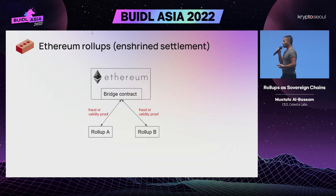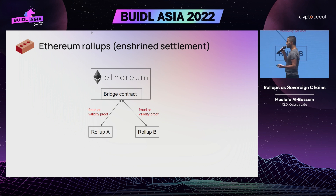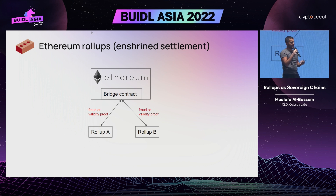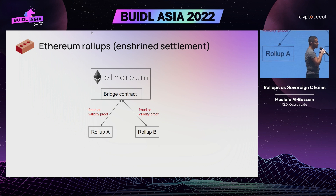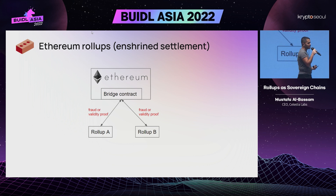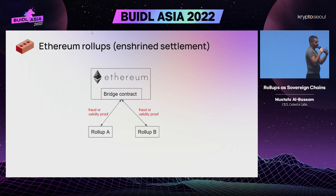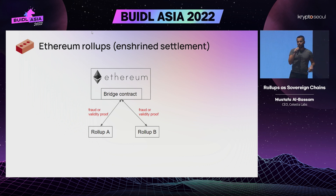In the current status quo — how current Ethereum rollups are designed — Ethereum is acting as that settlement layer. These rollups post their data to Ethereum and also to a smart contract on Ethereum, which interprets those headers and can also interpret fraud and ZK proofs. In this setup, the rollup is effectively a layer two or a baby chain to Ethereum, where the correct or canonical chain for that rollup is decided by a smart contract on Ethereum.